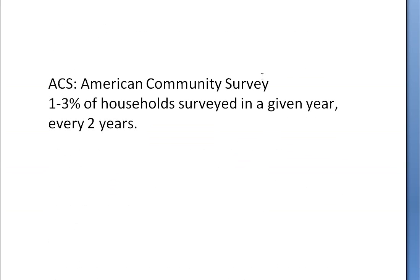The American Community Survey is something the Census Bureau does every two years. Instead of trying to get one in six households answering a long form like we did for the census, every two years the American Community Survey gets anywhere between one and three percent of households, depending on the state and county. For example, in Florida they got about 1.2 percent of households in a particular year, while in North Dakota they got about three percent — so there's a lot of variability.